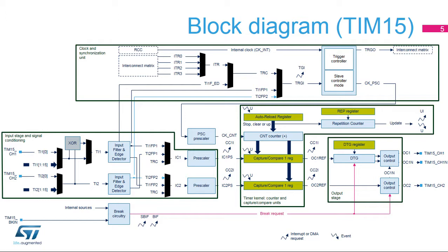Note that TIM-XCH1 and TIM-XCH2 appear on both sides to indicate they are both input and output capable. Timer 15 supports a break input that can be used to automatically set the channel outputs in a predefined state whenever a break event occurs. Timer 15 also supports a dead-time generator unit named DTG that inserts a dead-time on PWM complementary outputs. Each part of this block diagram is described in the next slides.